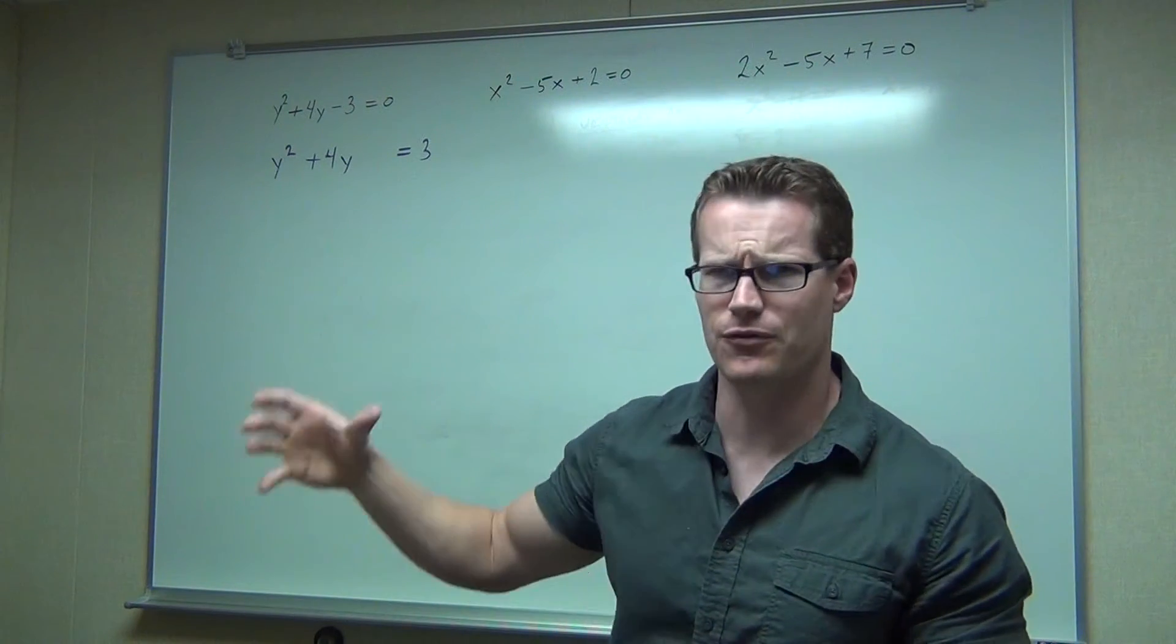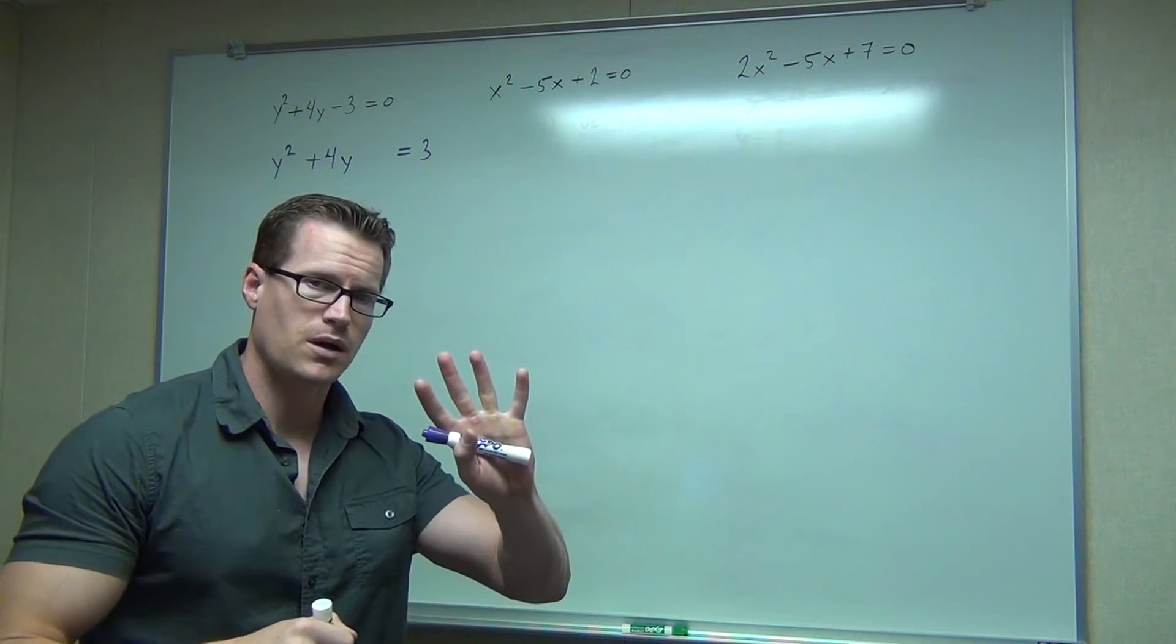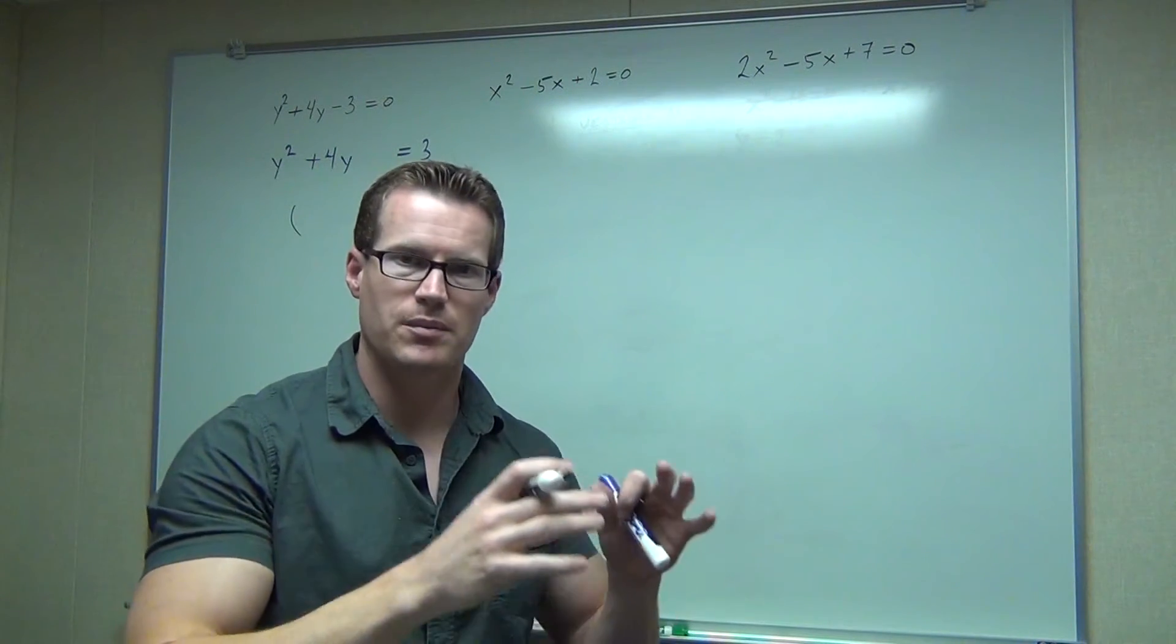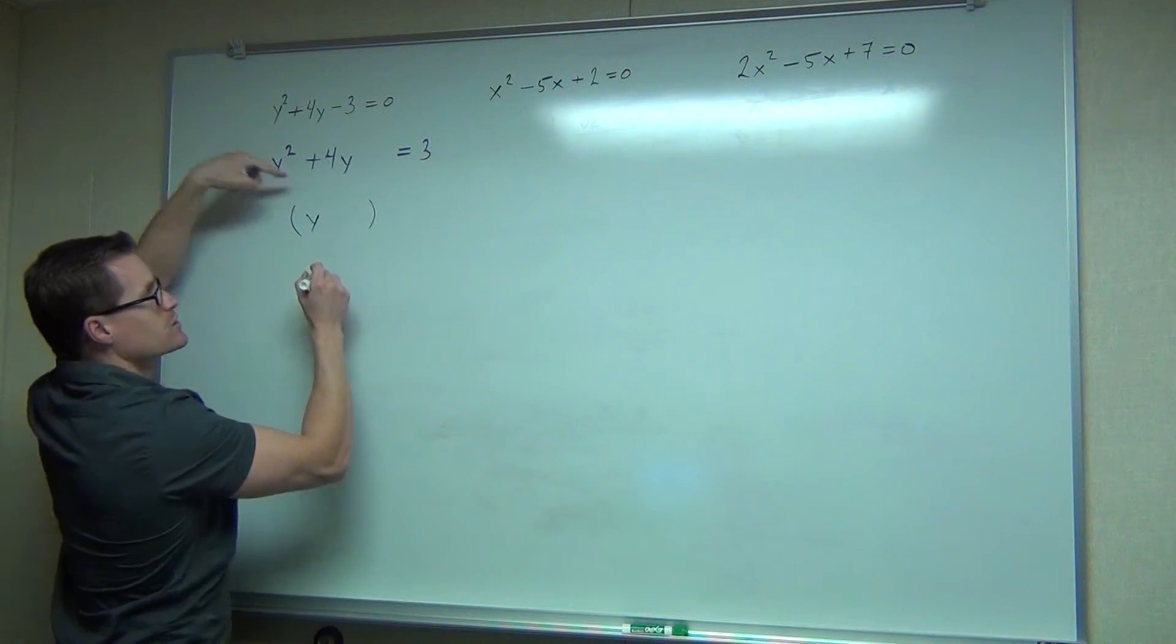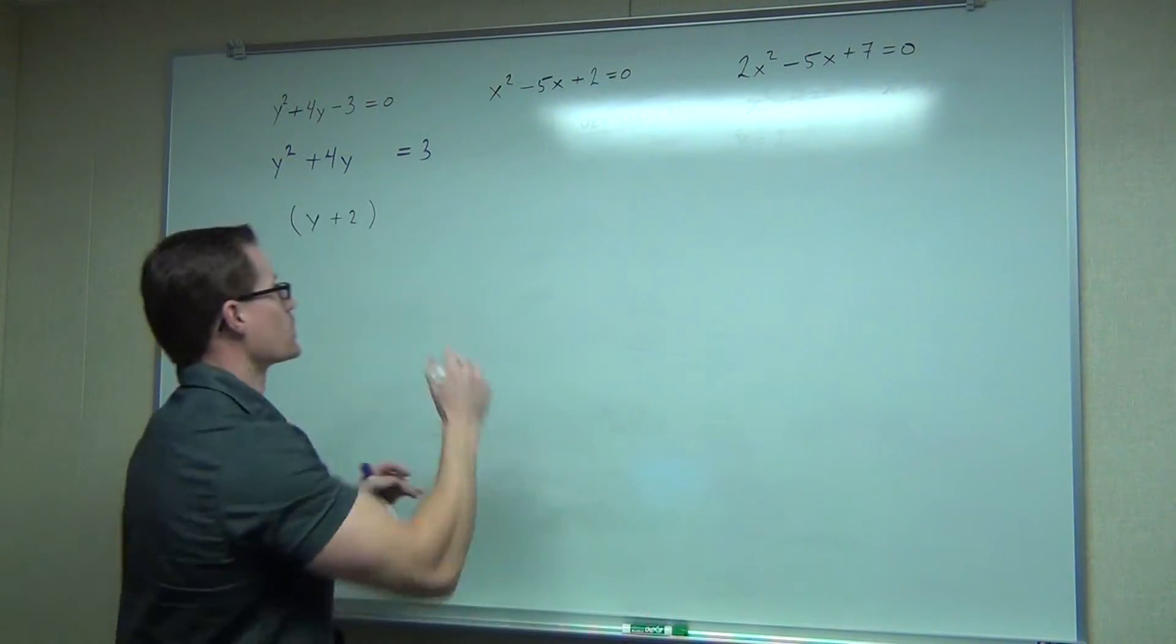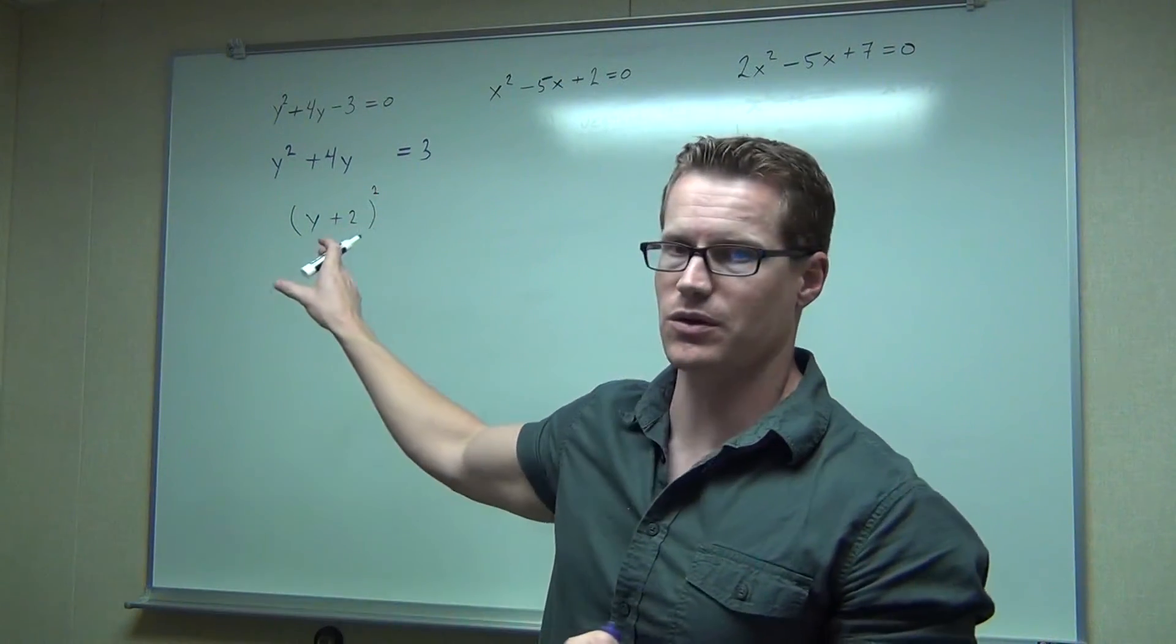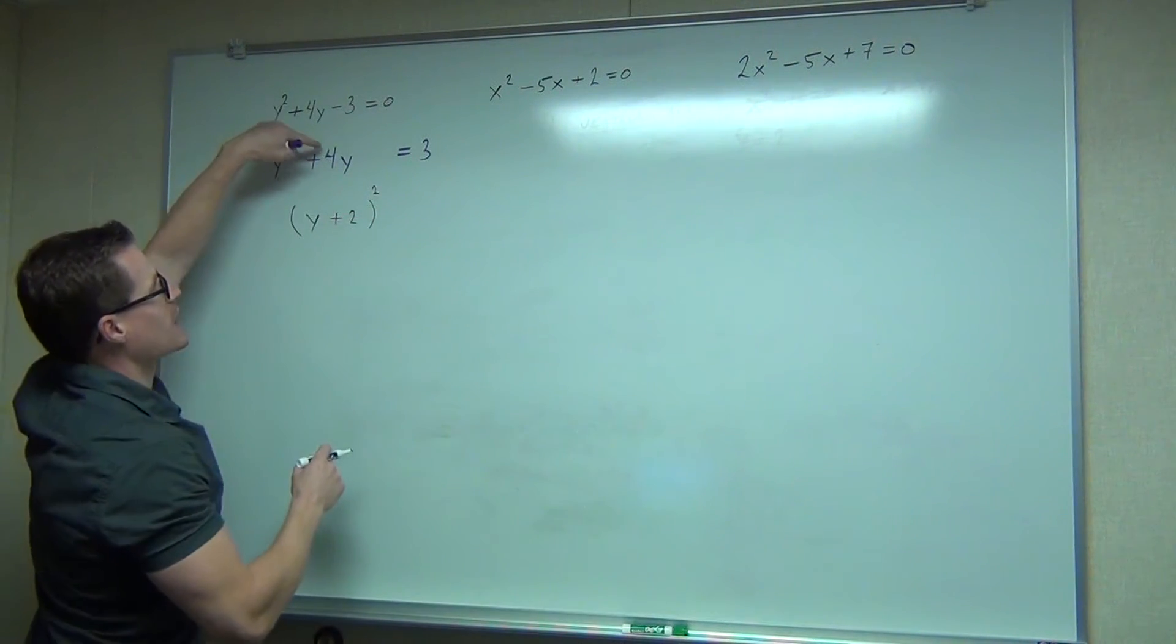So we're looking at the x coefficient. That would be the positive 4. What we do is we take half of that. Half of 4 is 2. So right now, before you actually complete the square, you can go ahead to your next step and complete the factoring as you're doing it. So when I do that half of 4 equals 2 thing, this is what it means. I'm taking the x coefficient, that's 4 divided in half, that's going to give you 2. I know automatically that my very next step is going to be factored as y plus 2.